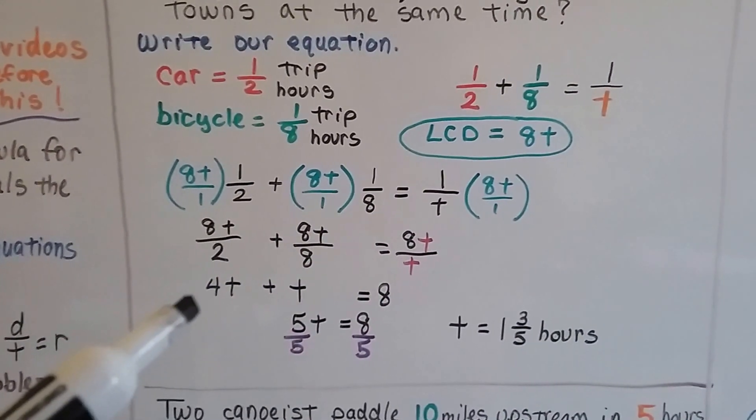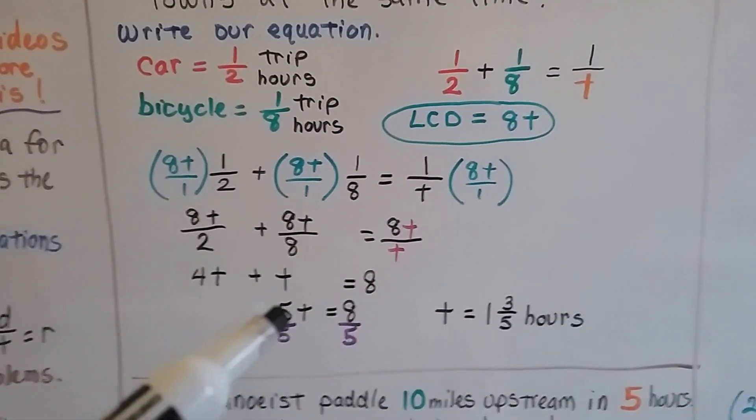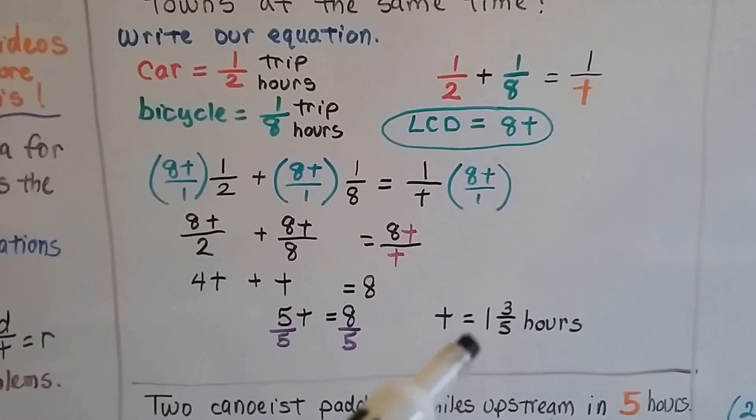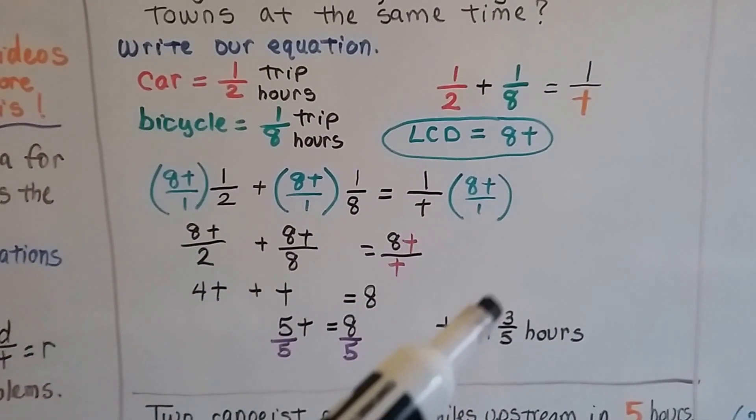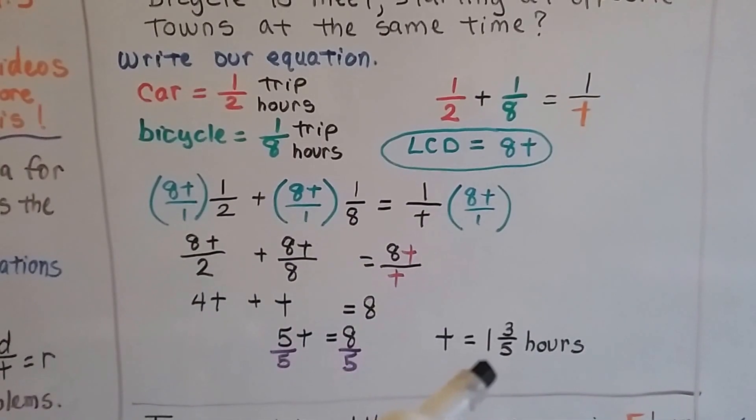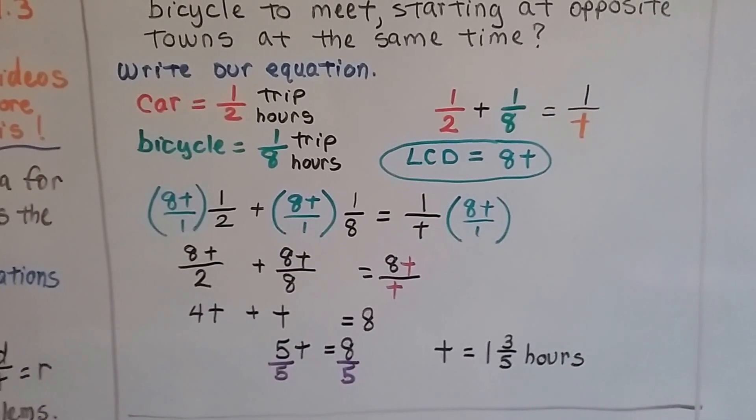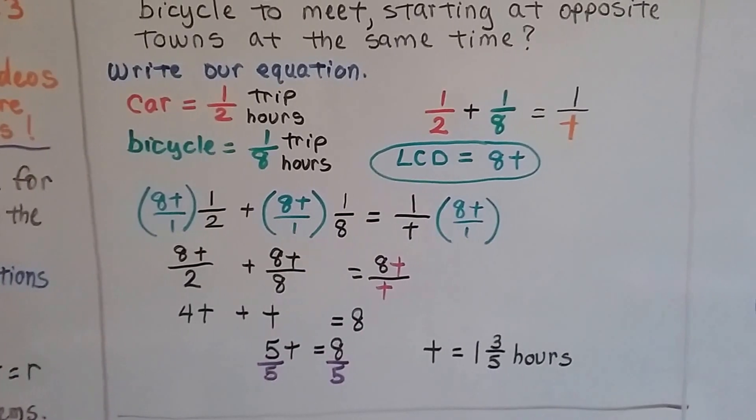We can combine like terms and simplify this to get a five t equals eight. We divide each side by this coefficient five, and we find out that the t is going to be one and three-fifths hours. So, after one and three-fifths hours, they will meet at the same spot, somewhere in between Chicago and Bloomington, Illinois.